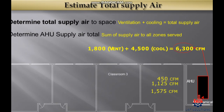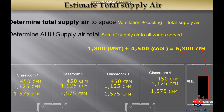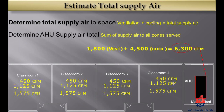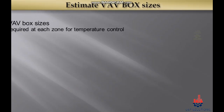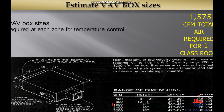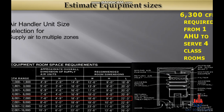Now that we have calculated the CFM for space cooling load and ventilation load, let's estimate total CFM for total supply air. Space cooling load for one classroom is 1,125 CFM and ventilation load is 450 CFM, totaling 1,575 CFM per classroom. With four classrooms, total supply air is 1,575 multiplied by 4, which equals 6,300 CFM. We will need a VAV box that can supply the required CFM, and an air handling unit that can supply 6,300 CFM or at least 10% above actual requirement.